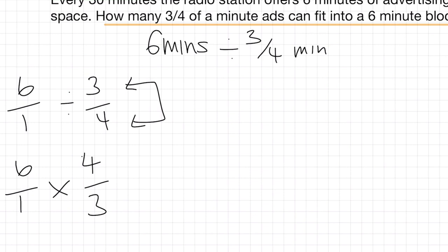And when we're doing that, we simply multiply straight across the top and straight across the bottom. And when we do that, we're going to end up with six multiplied by four, which is 24, one multiplied by three, which will give me three.